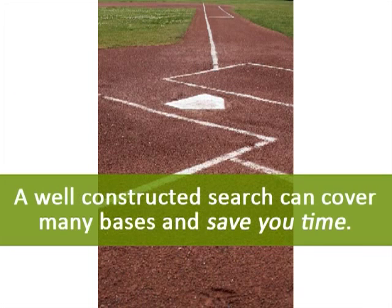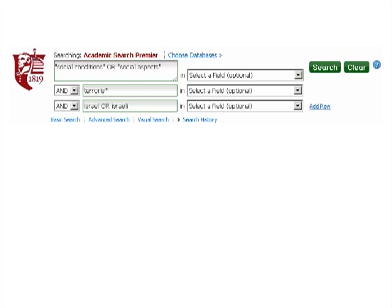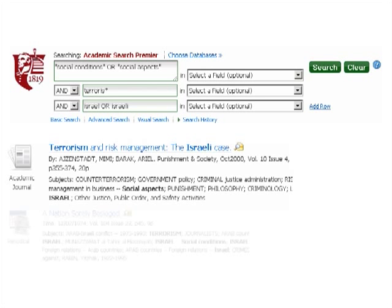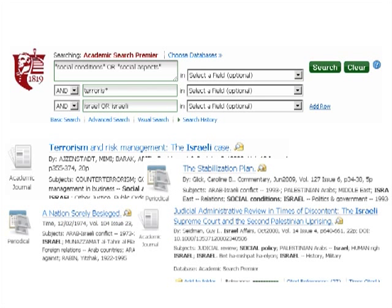A well-constructed search can cover many bases at once and save you time in the long run. Here is a search constructed from the research topic in an earlier video: What social conditions caused the growth of terrorist organizations in Israel? Notice each concept is on its own line, connected together by AND. Synonymous terms are linked up with OR, and quotation marks are used around the phrases. Instead of using OR for the variants of terrorism, it's simply truncated. You can do this too, to great effect.